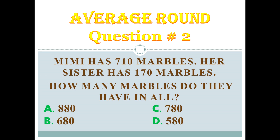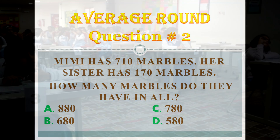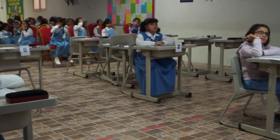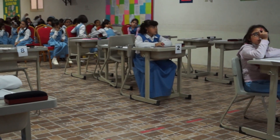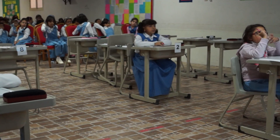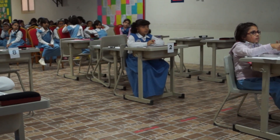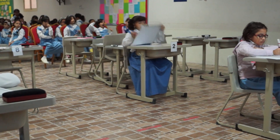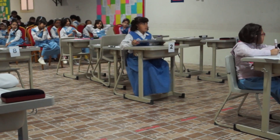117 marbles. How many marbles do they have in all? Again, Mimi has 710 marbles. Her sister has 117 marbles. How many marbles do they have in all? A: 880. B: 680. C: 780. D: 580.